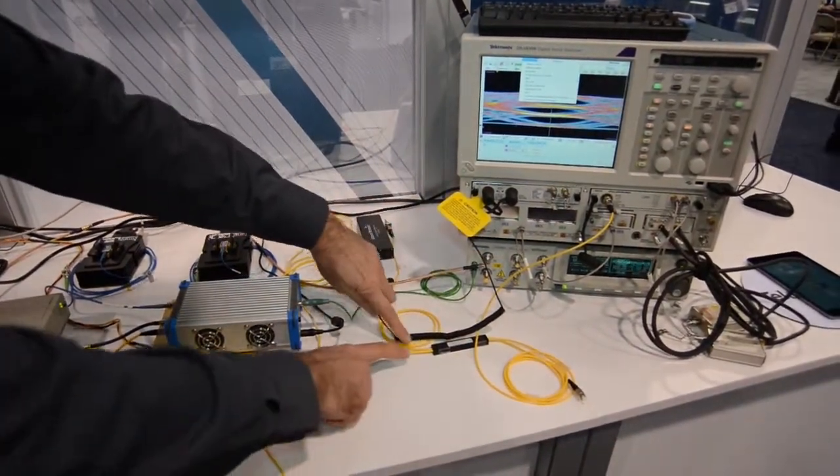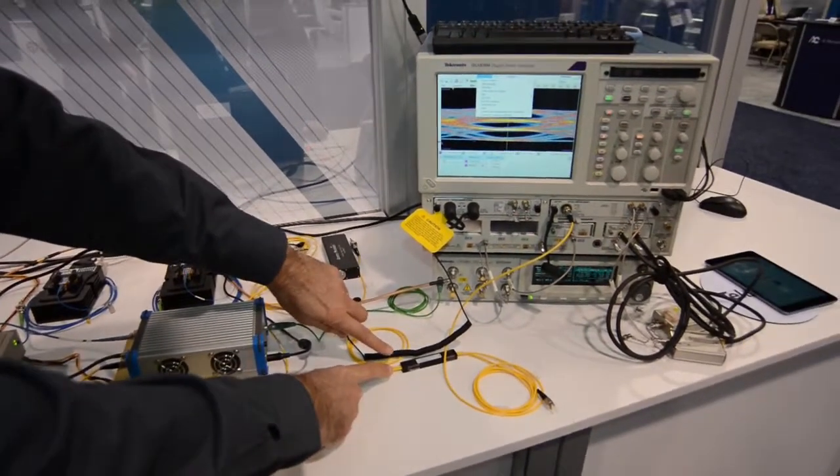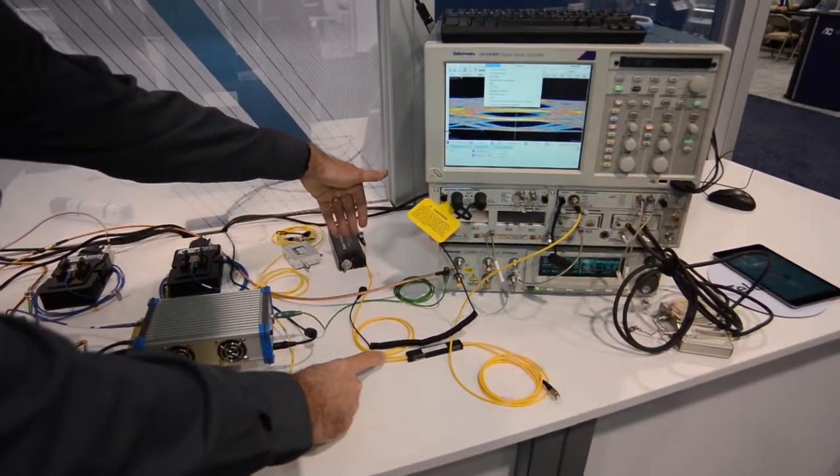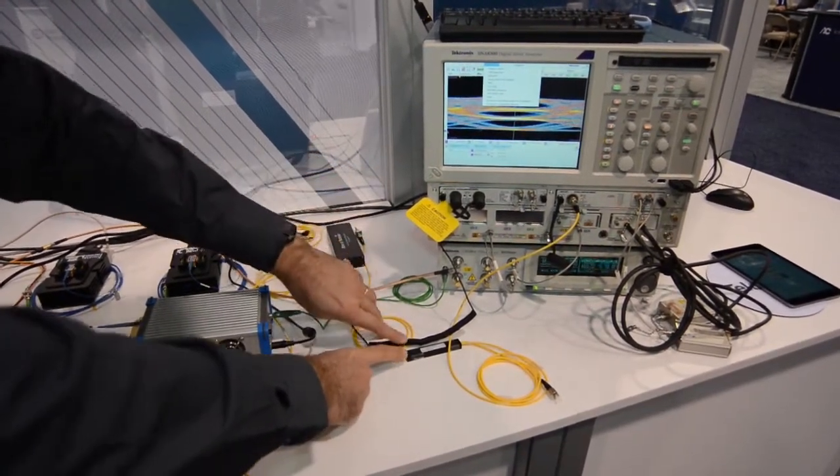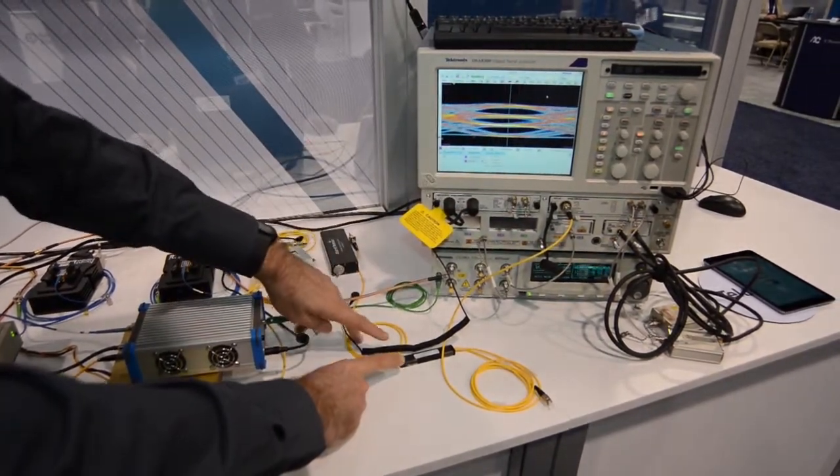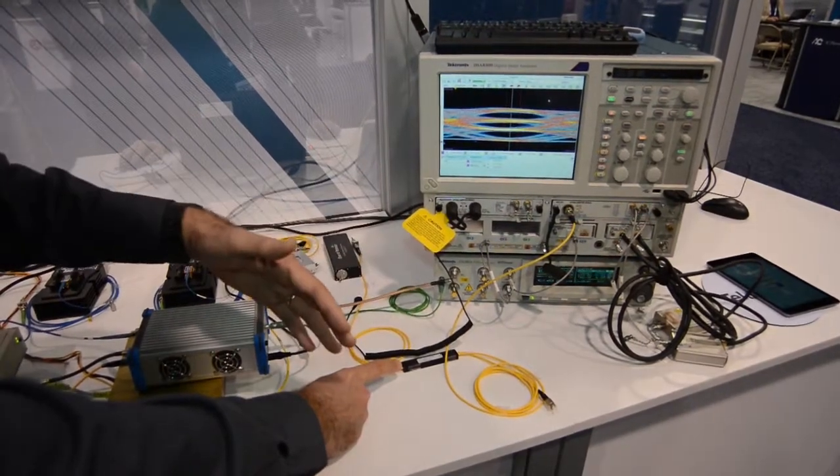So this optical combiner takes the two streams. I need to align the streams and I need to attenuate one of them. So that's done here in just optical attenuator and optical delay line. The combined 56 gigabit stream is then giving me this PAM4 56 gigabit I.